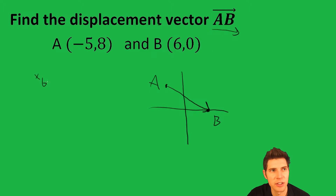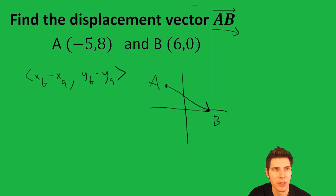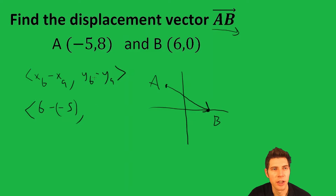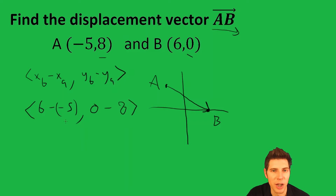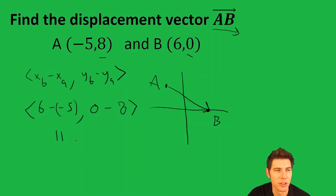So the formula here is x-sub-b minus x-sub-a, comma y-sub-b minus y-sub-a, to get our vector. So x-sub-b is 6 minus negative 5, comma, and then y-sub-b is 0 minus 8, the y for A. 6 minus negative 5 is 6 plus 5, which is 11. And 0 minus 8 is negative 8.